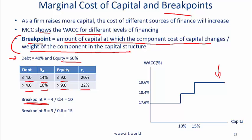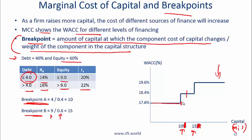For example: debt is 40% and equity is 60% of capital structure. The cost of debt is 14% up to $4M and 16% beyond; the cost of equity is 20% up to $9M and 22% beyond. Break point A (where cost of debt changes) = $4M ÷ 0.4 = $10M. Break point B (where cost of equity changes) = $9M ÷ 0.6 = $15M. You can then calculate the WACC for capital raised up to $10M, between $10M and $15M, and beyond $15M.